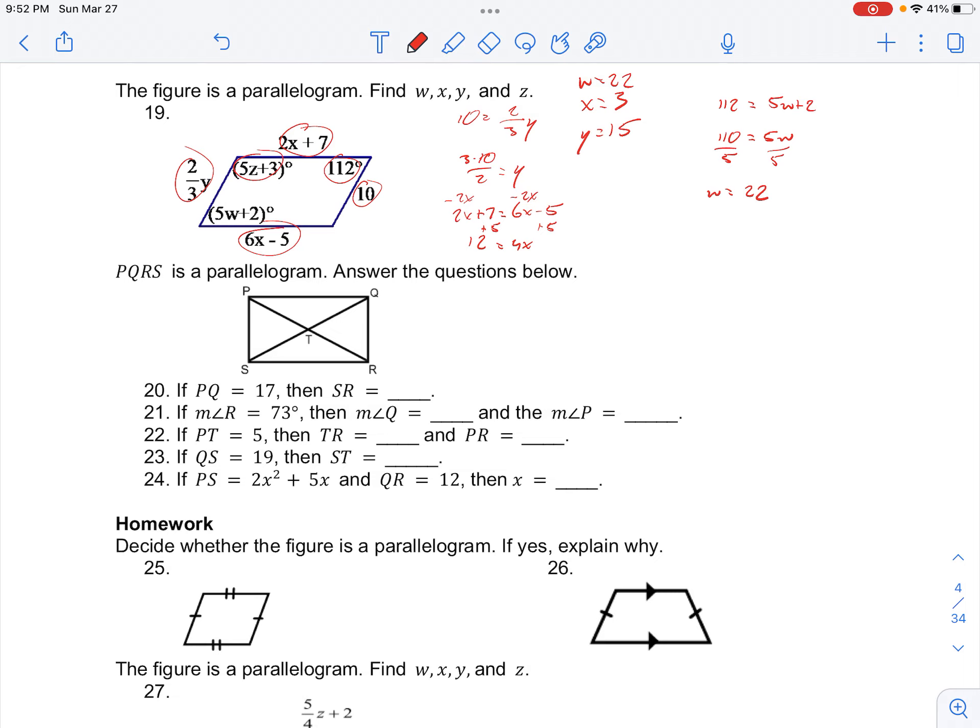And so when we have these pair of angles that are located next to each other, if they're consecutive angles, then they're supplementary, given by our theorem. So that means that we can set 180 degrees equal to 112 degrees plus 5z plus 3 degrees.